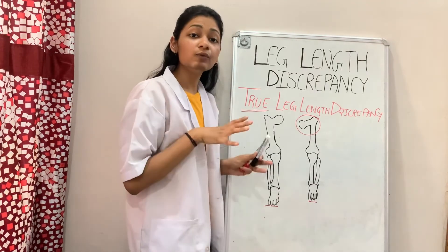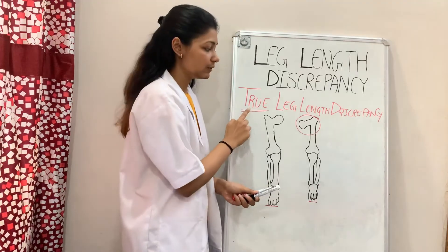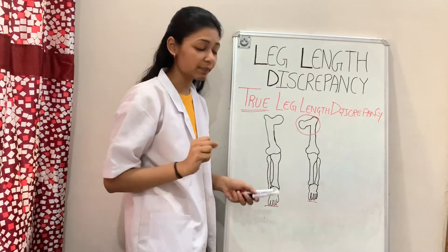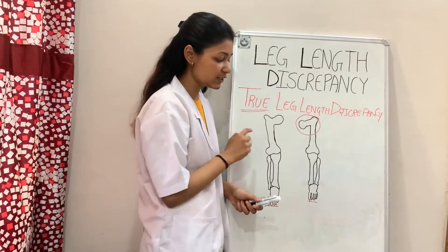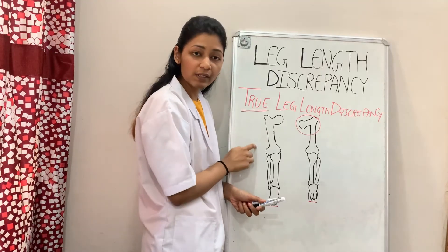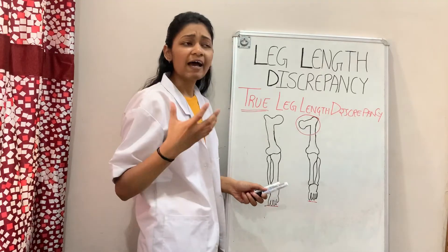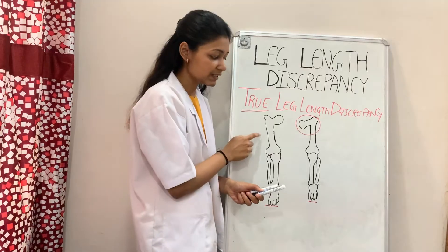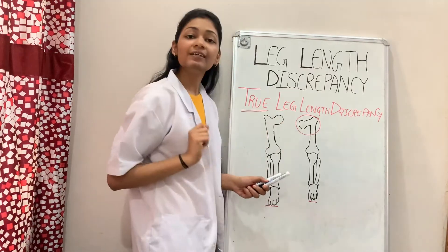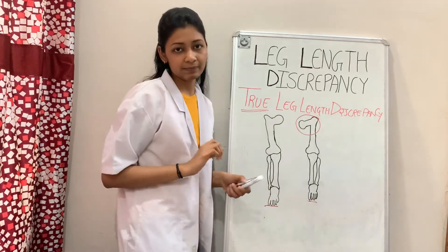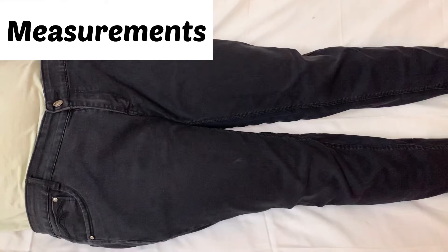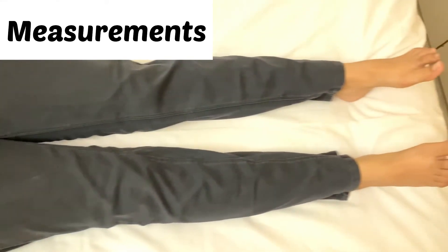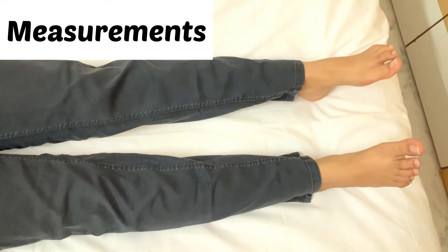So if there is any malunion after a fracture, or if there is a short femur or short tibia present in a patient, leg length discrepancy due to that is known as true leg length discrepancy. Always remember: if there is any change in the bone of the lower limb — any change in the anatomical structure — then that will be considered true leg length discrepancy.